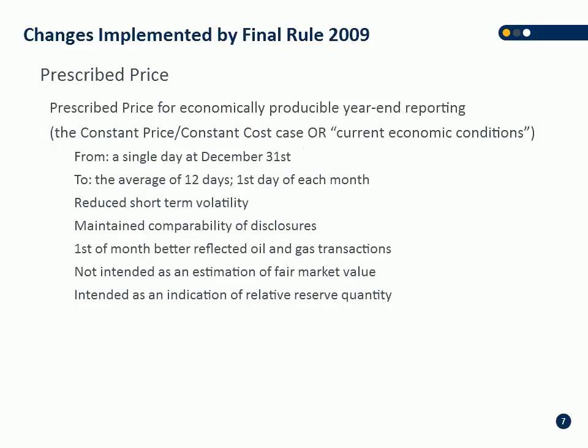The major changes implemented in the final rule — the biggest one was the prescribed price. Under the old system, all SEC disclosure of oil and gas reserves were done based on a single trading day in the U.S. — all based on December 31 pricing for that year — which caused some significant issues in certain years. Basing your asset value of reserves on a single trading day can cause big issues, and a few years back there were some relatively enormous swings in oil and gas prices, especially in late December, causing major issues with SEC disclosure.